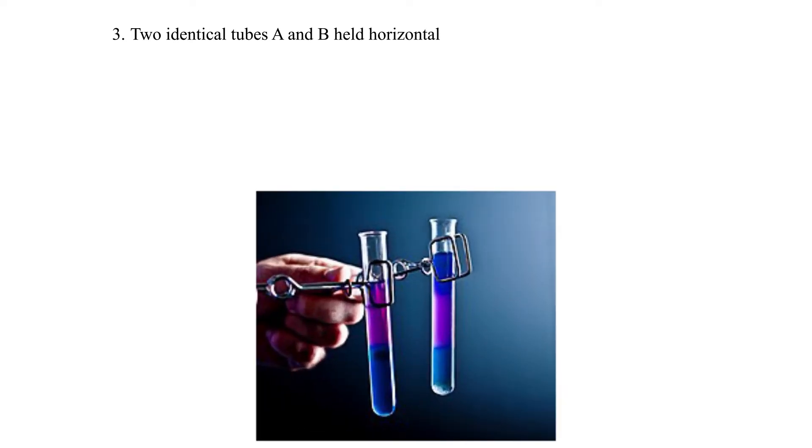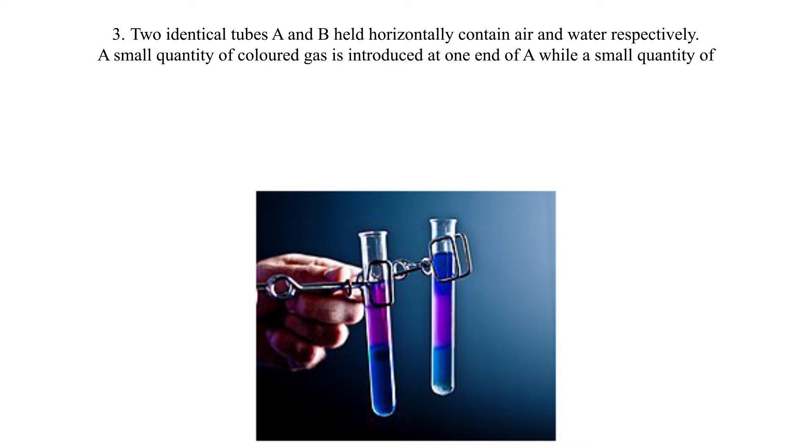Question 3: Two identical tubes A and B held horizontally contain air and water respectively. A small quantity of colored gas is introduced at one end of A, while a small quantity of colored water is introduced at one end of B. State with reason the tube in which the color will reach the other end faster.